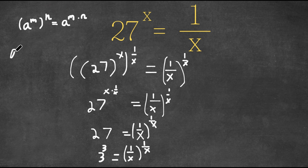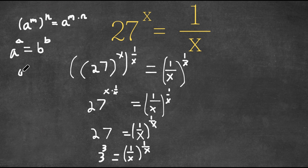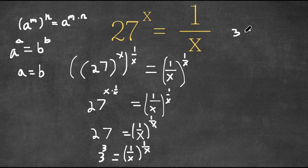If we have something in the form a to the power of a equals b to the power of b, this actually means that a is equal to b. So we have 3 to the power of 3 equals 1 over x to the power of 1 over x, which means that 3 is equal to 1 over x.